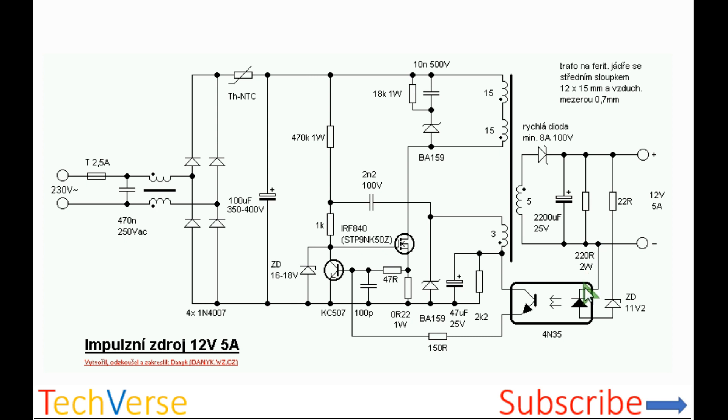For feedback, you will have this optocoupler. You can use the PC817 or the 4N35. The way this works, if you want 12 volts, you should use an 11 volt zener diode.